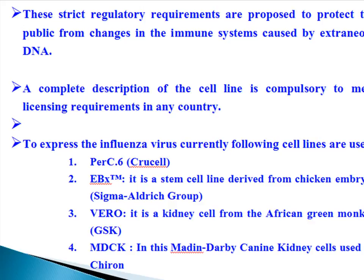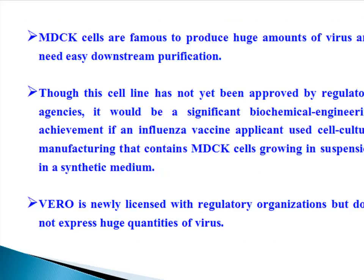To express the influenza virus, currently the following cell lines are used: PERC6 and EBX™, which is a stem cell line derived from chicken embryos; Vero, which is a kidney cell from the African green monkey; and MDCK — Madin-Darby Canine Kidney cells used in Chiron. MDCK cells are known to produce huge amounts of virus and need easy downstream purification. Though this cell line has not yet been approved by regulatory agencies, it would be a significant biochemical engineering achievement if an influenza vaccine applicant used cell culture manufacturing containing MDCK cells growing in suspension in a synthetic medium. Vero is newly licensed with regulatory organizations but does not express huge quantities of virus.